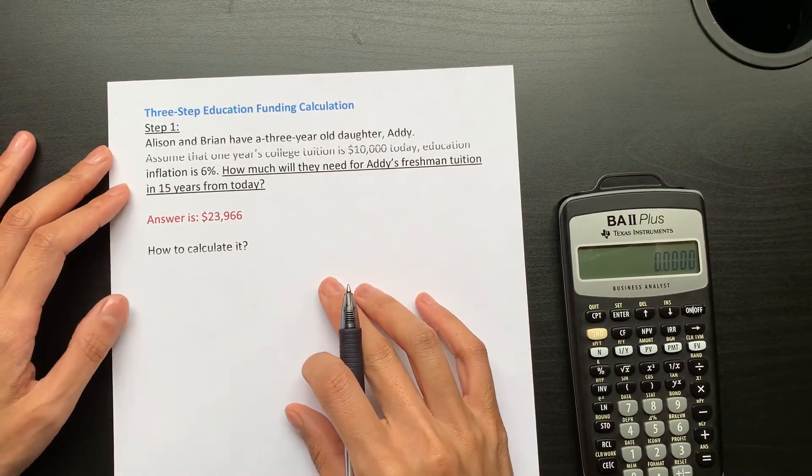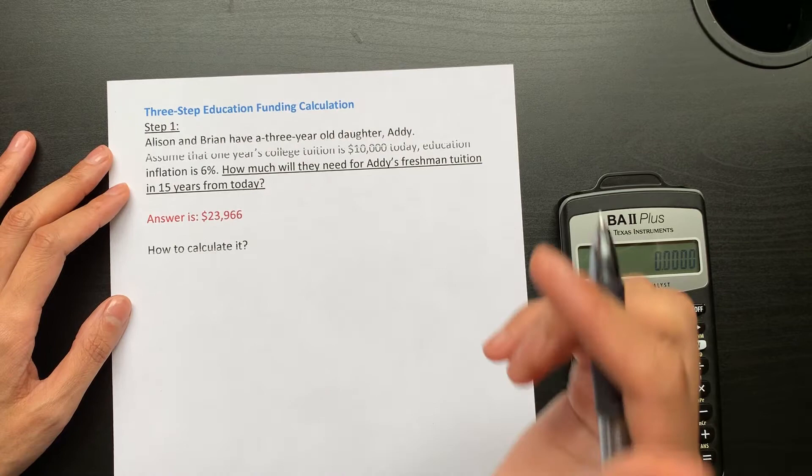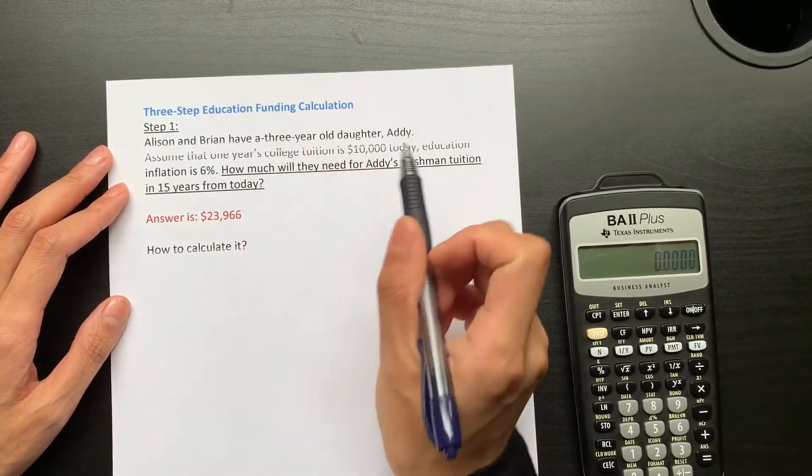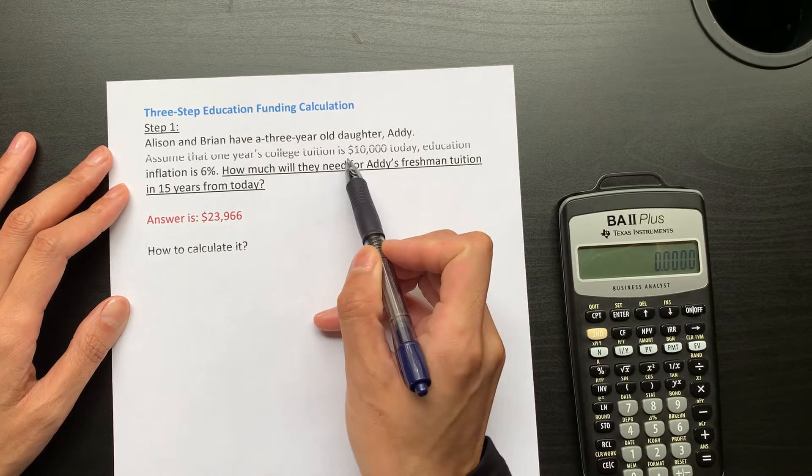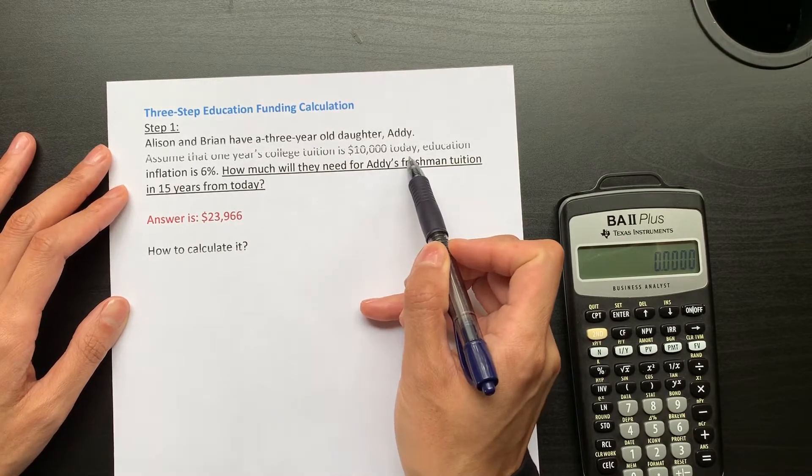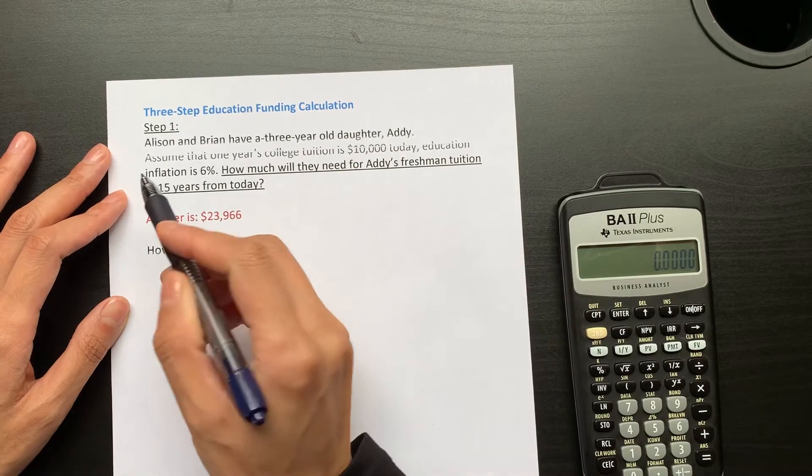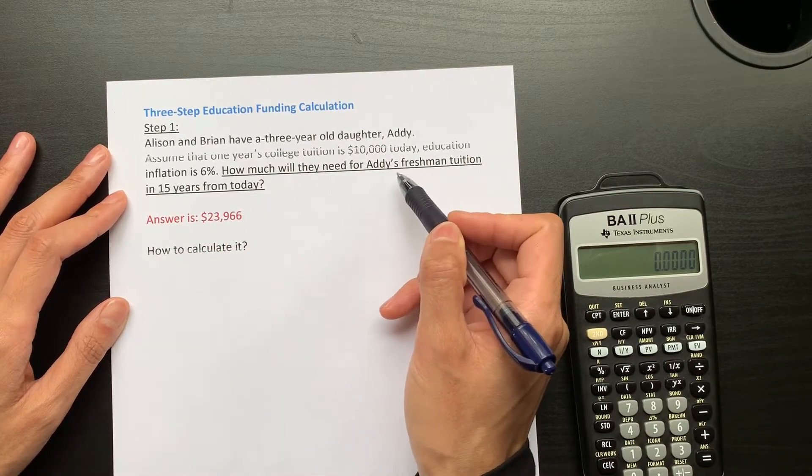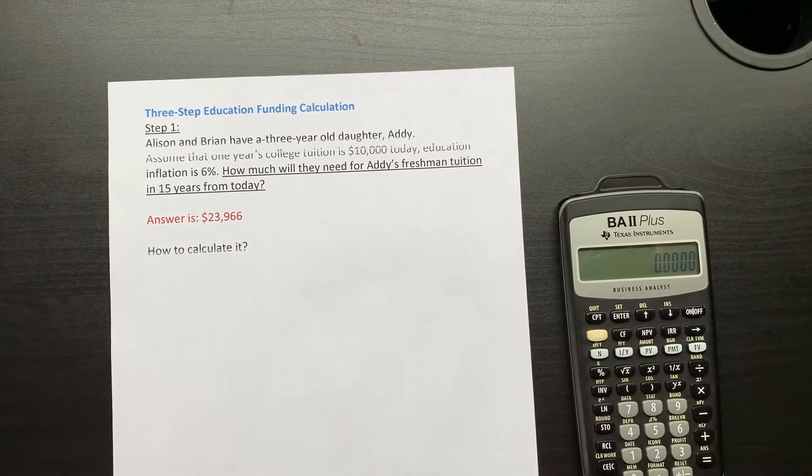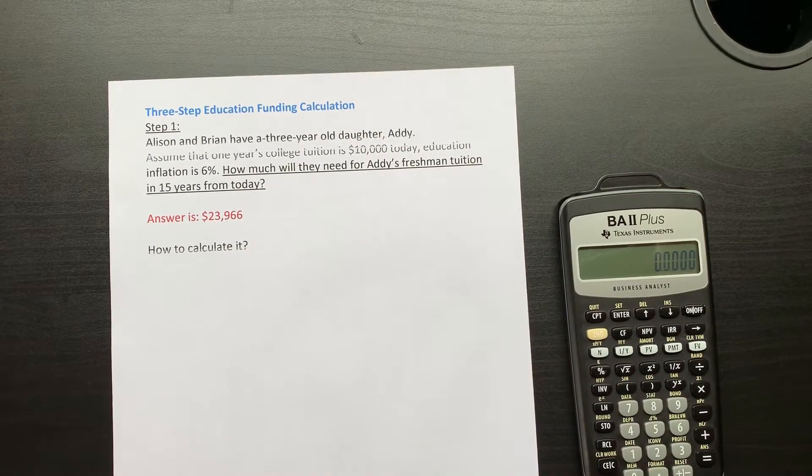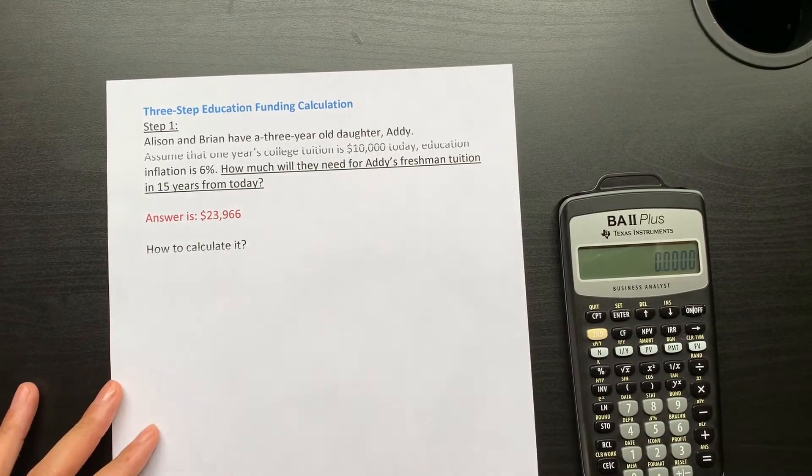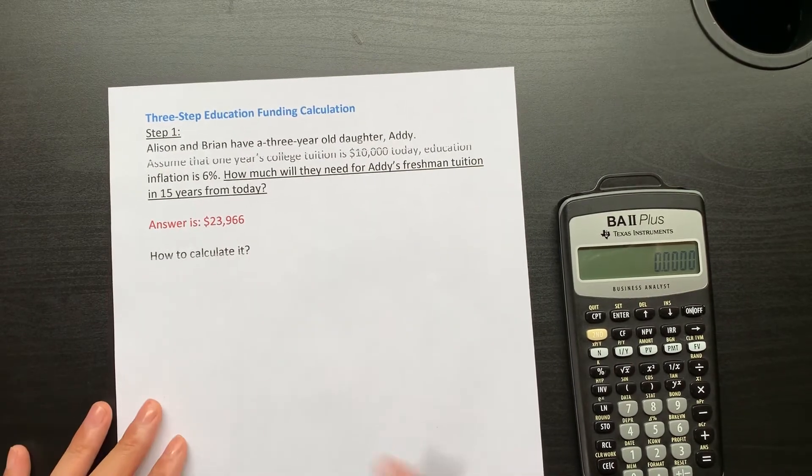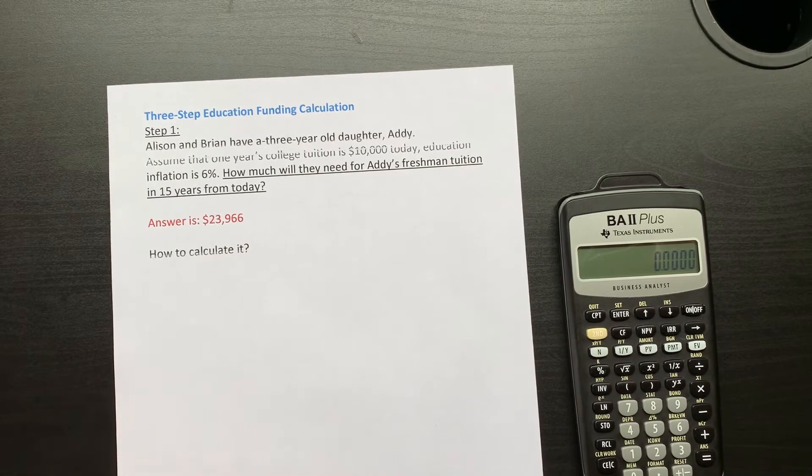Assume that one-year college tuition is $10,000 today. Education inflation is 6%. How much will they need for Addy's freshman tuition in 15 years from today? Assume Addy goes to college at age 18. The answer given here is $23,966.